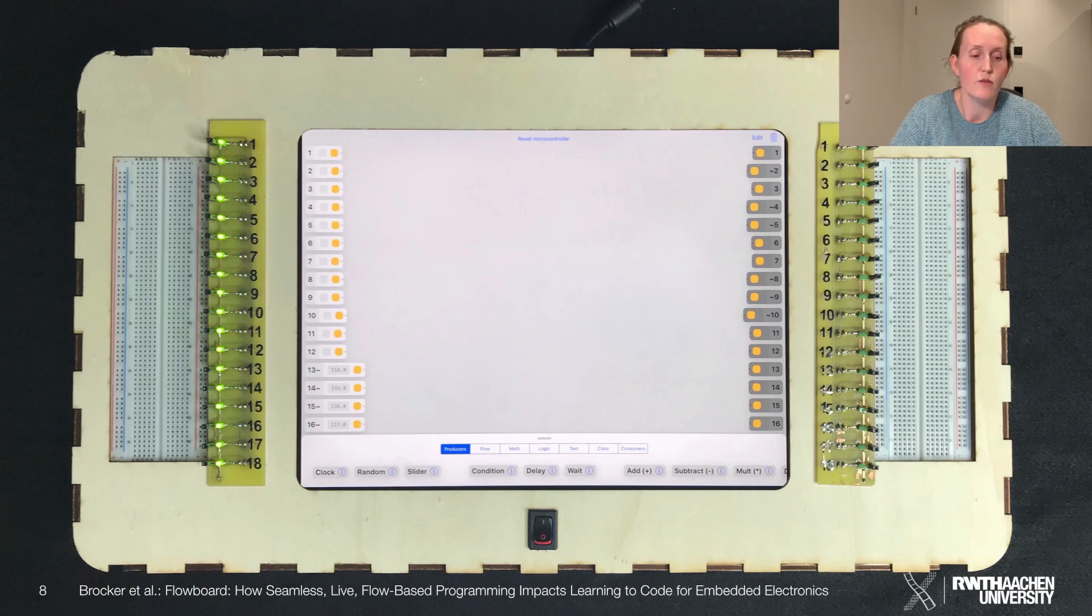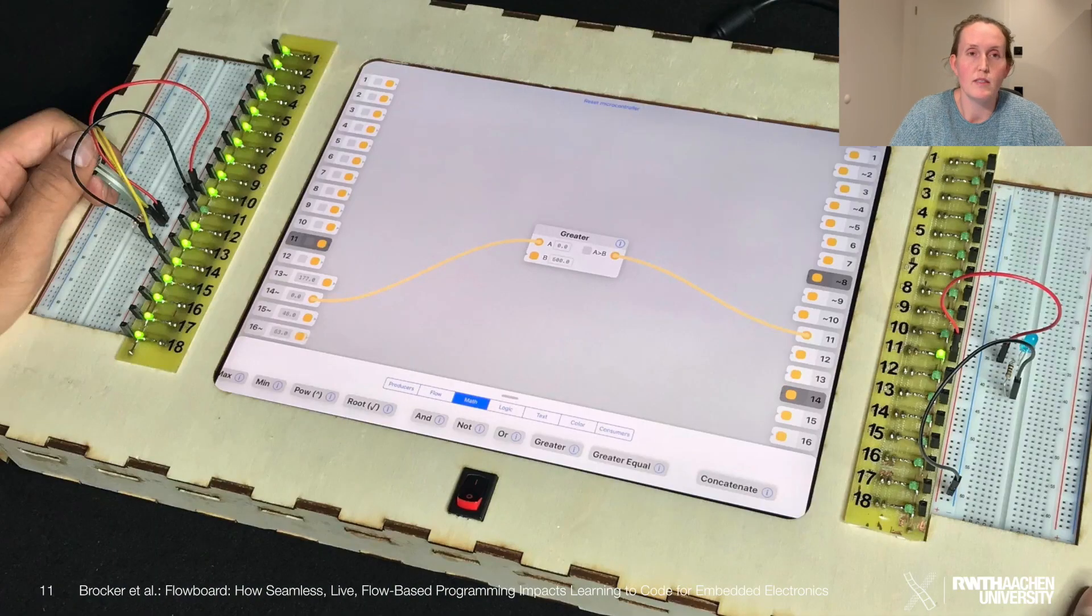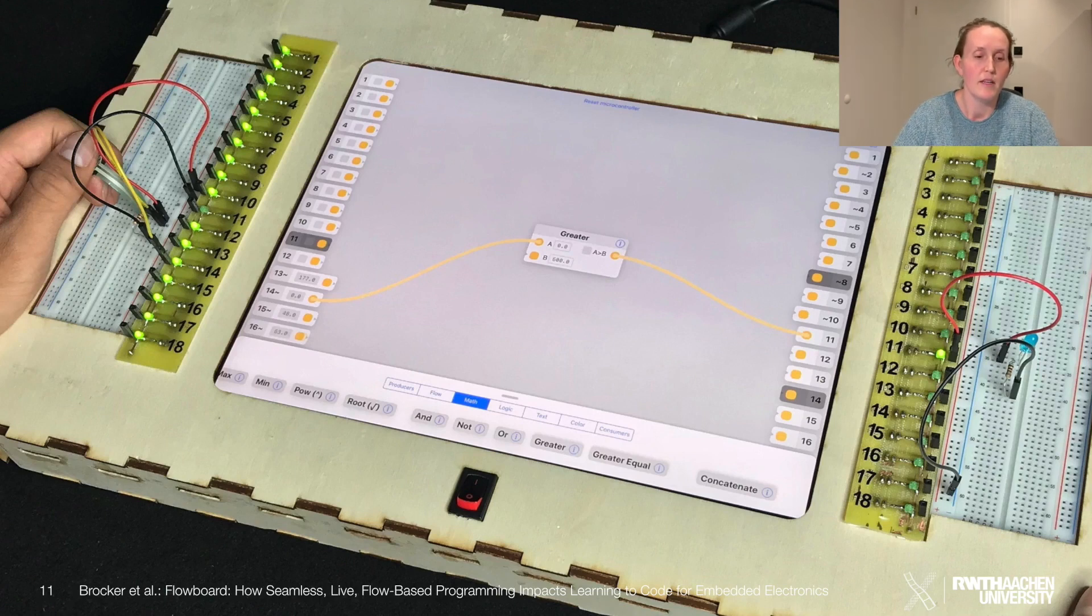Our Flowboard consists of an Arduino, an iPad, two breadboards—one left and one right—and an IDE that uses visual flow-based programming. The graph edits take effect immediately, so our Flowboard is now a live coding environment. Here you can see a setup. You can plug your electronic components into the breadboards and link them to the processing nodes on the screen via the pins.